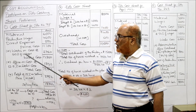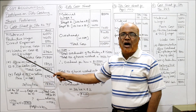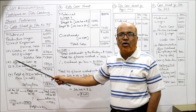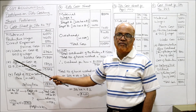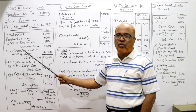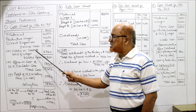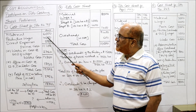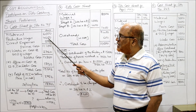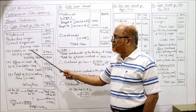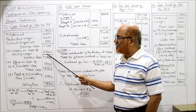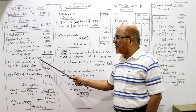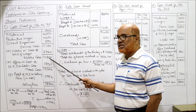Now factory overhead — also called works on cost or works cost. Works on cost is 60% of direct wages as given in the problem. The direct wages are 4,600, so 4,600 into 60% gives 2,760. Adding this up, the works cost is 13,860.